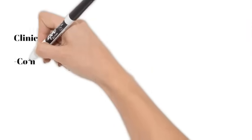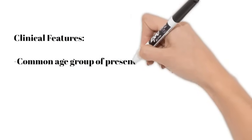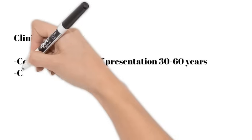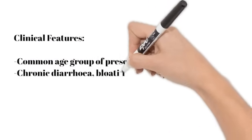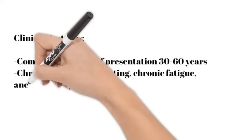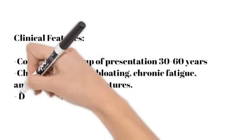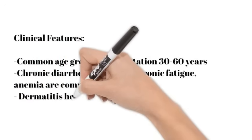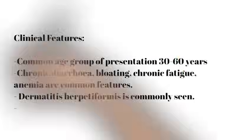The common clinical features: as seen in all other autoimmune diseases, this is also more common in females, generally 30 to 60 years of age. Chronic diarrhea, bloating, and fatigue are common features. Anemia is more common in reproductive age groups, and dermatitis herpetiformis is strongly associated with this.